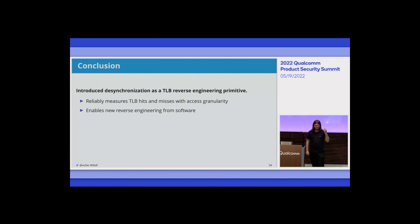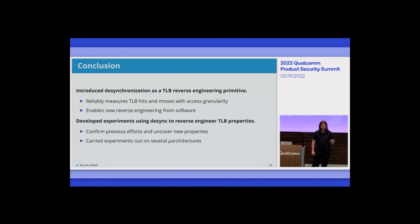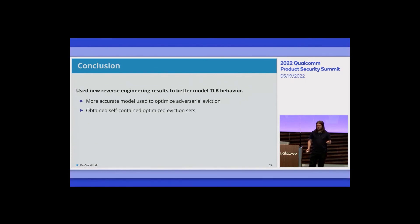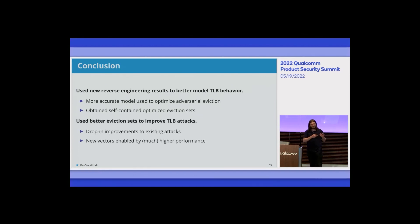In conclusion: we've introduced desynchronization as a novel TLB reverse engineering primitive that allows us to measure TLB hits and misses with access granularity without relying on any timing. This enables new reverse engineering from software. We developed experiments using desynchronization to reverse engineer various TLB properties, many of which were previously undocumented, while confirming results of prior work like TLBleed and RevAnc. We used the new results — specifically replacement policies — to better model TLB behavior, optimize adversarial eviction, and obtain optimized eviction sets. Finally, we used this better eviction method to improve TLB attacks as drop-in replacements, and the higher eviction performance also enables several new attack vectors.